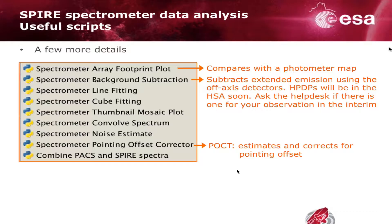A few more details on some of these scripts: the spectrometer array footprint plot script compares with the photometer map. The spectrometer background subtraction script uses the off-axis detectors to subtract extended emission, and the HPDP will be available soon. Do go ahead and ask the help desk if you think your observation has this particular problem.